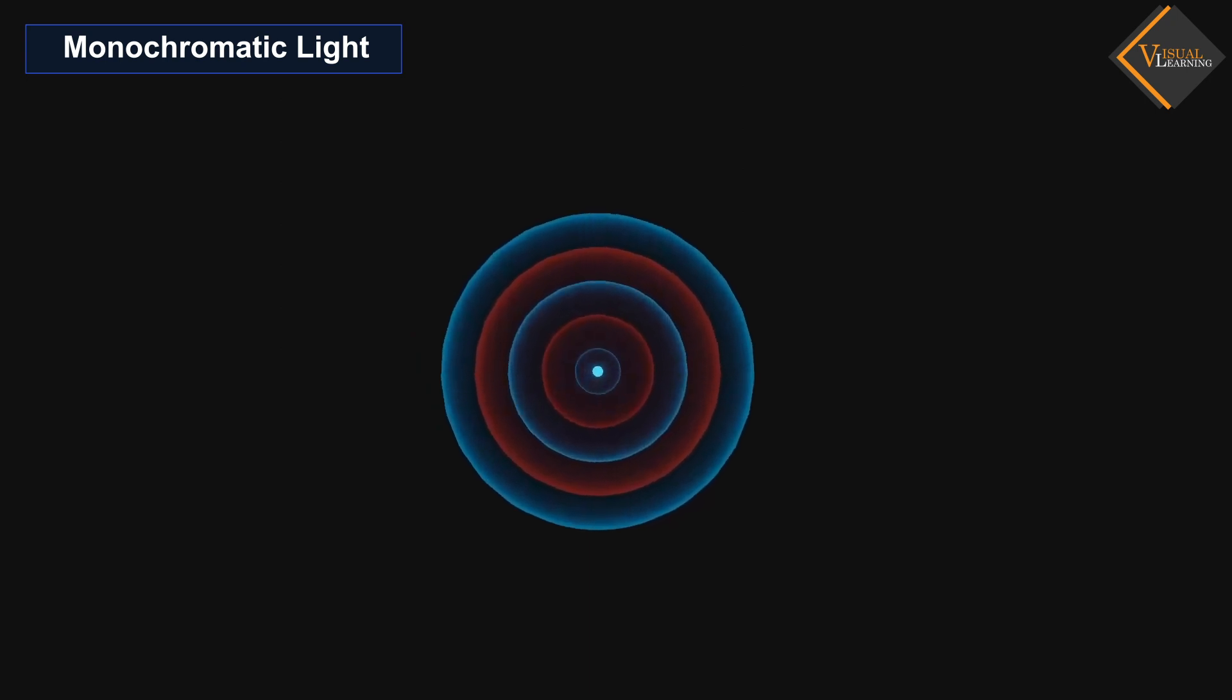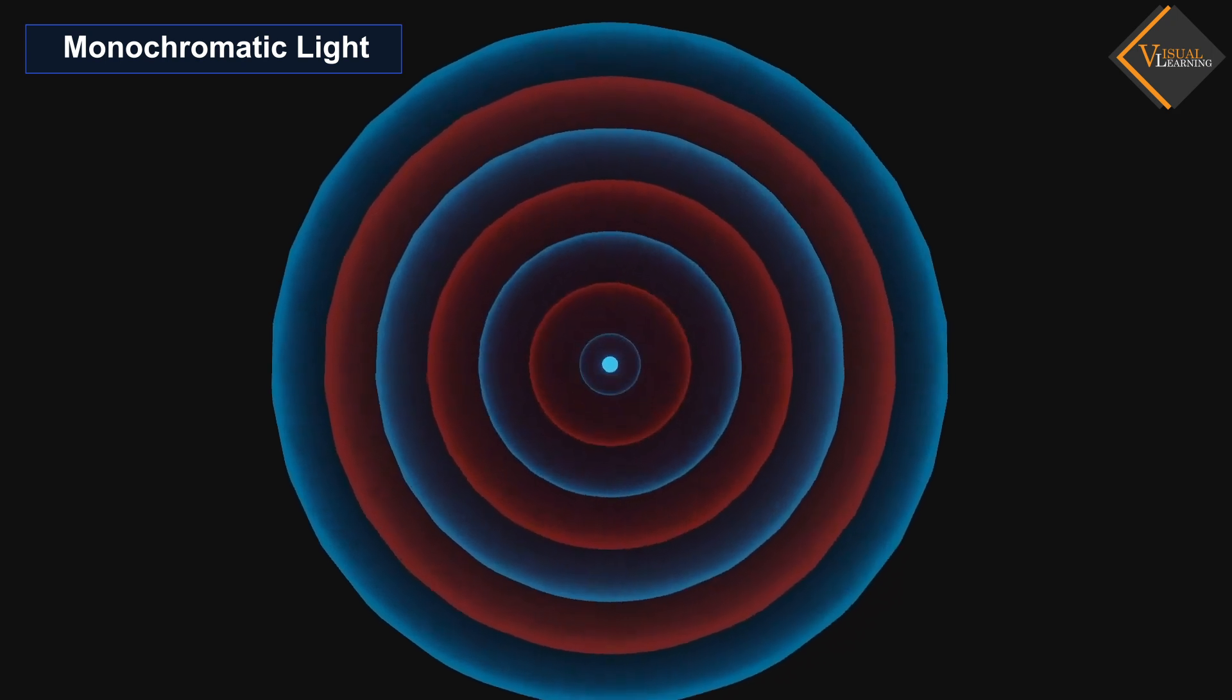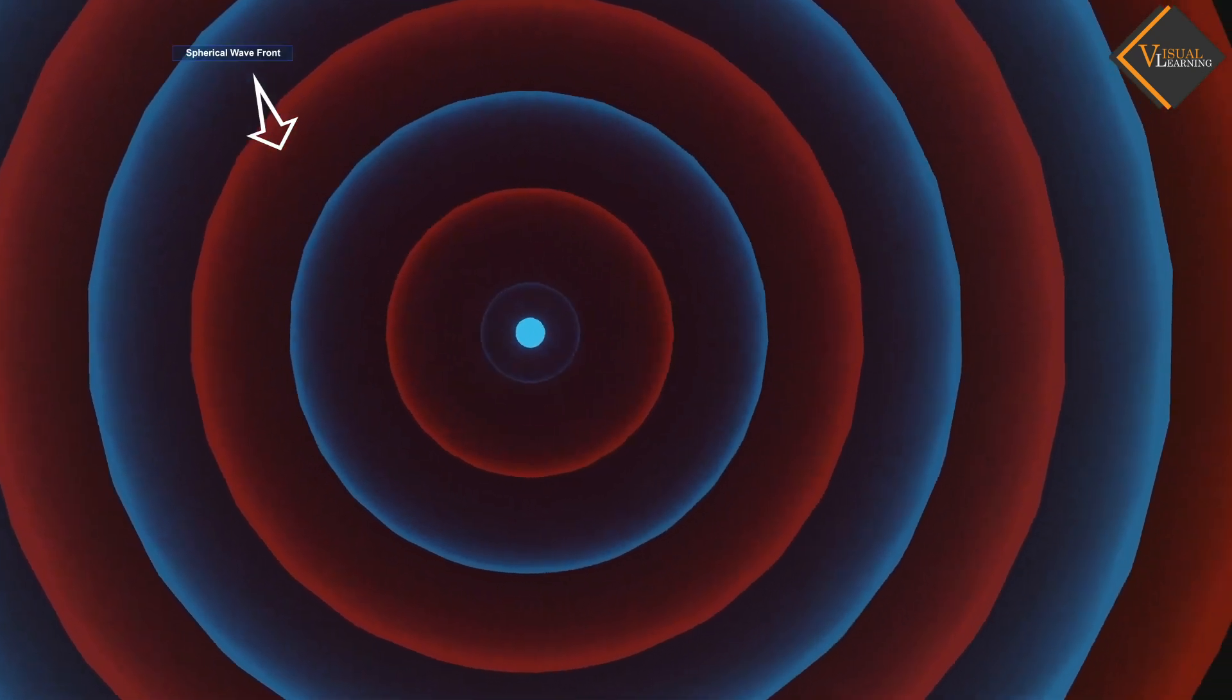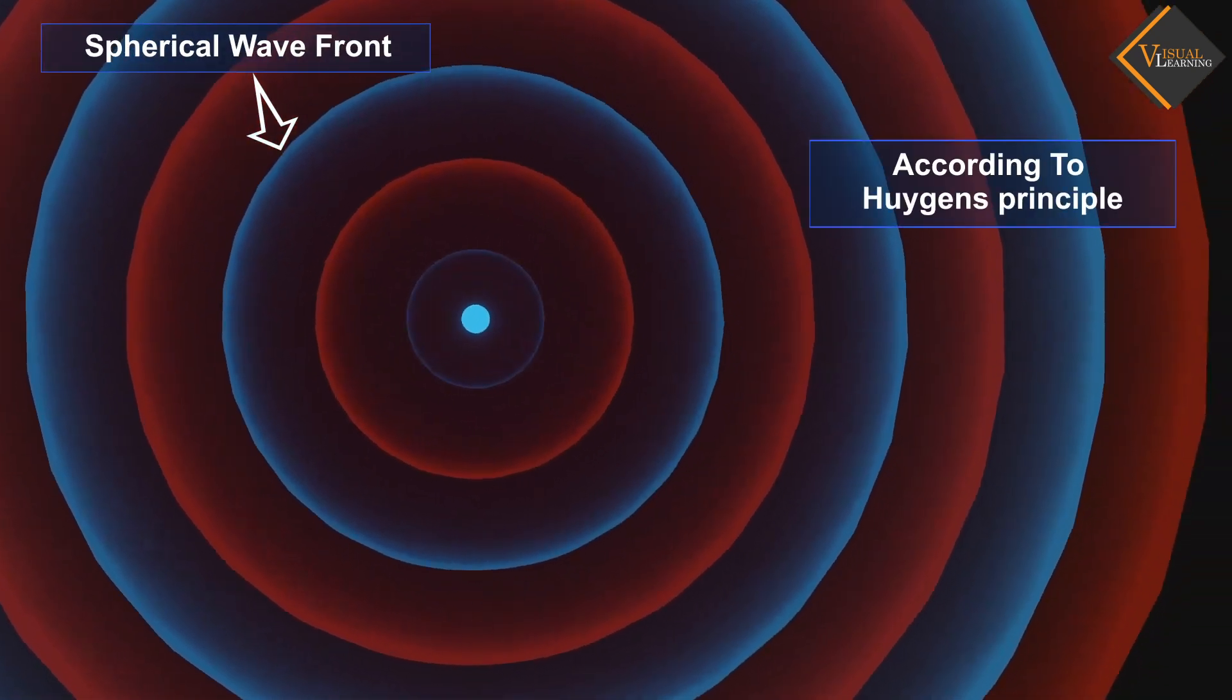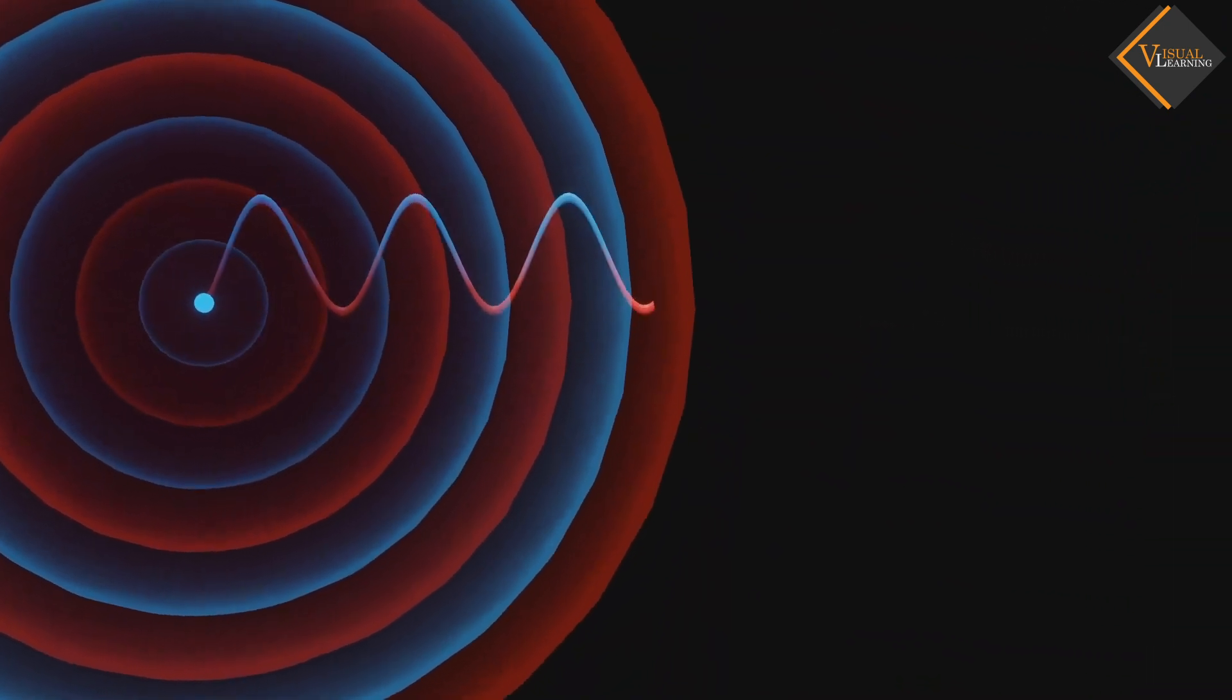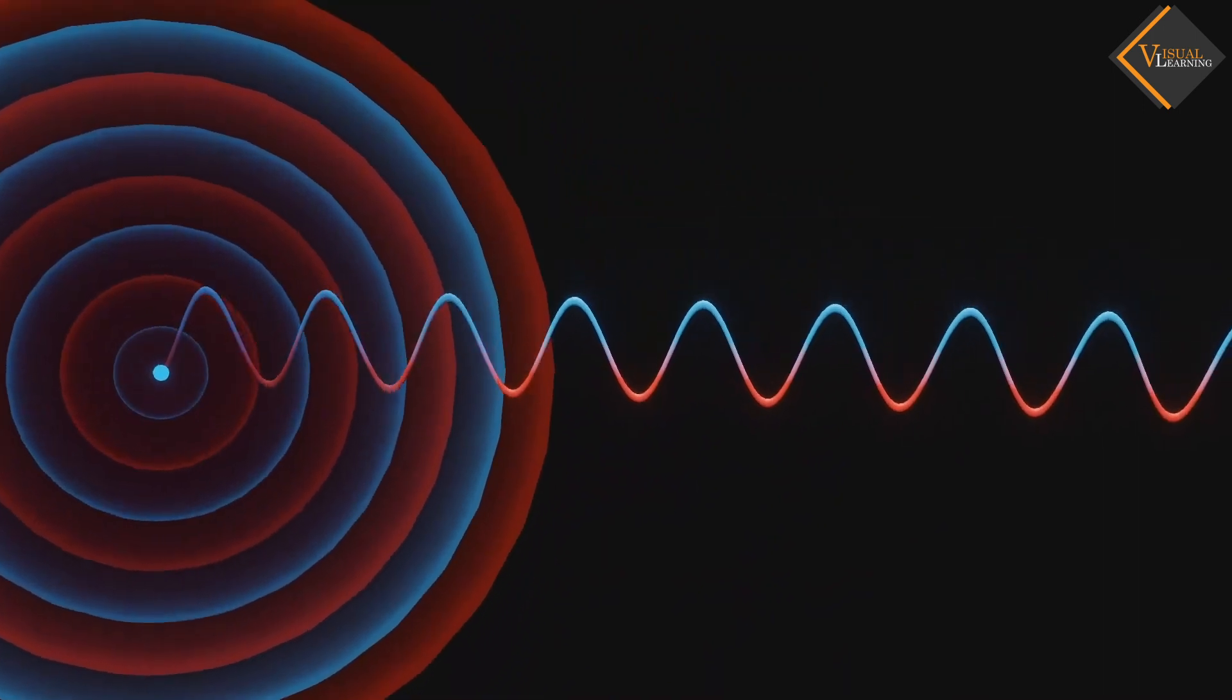The animation in this video illustrates how a monochromatic light source emits light waves. Monochromatic light sources emit single-color light. These light waves are emitted in the form of spherical wavefronts. In general, light waves are represented as sine waves. But in three dimensions, they travel in the form of spherical wavefronts.